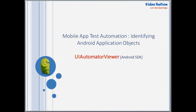Hello friends, welcome to VideoTuition. When it comes to UI testing of Android applications, a more efficient and reliable approach is to automate the testing flow. For automating any application, we first should be able to identify the elements of the application, which in the case of an Android application is not so straightforward. In this short video, I am going to tell you how we can identify objects of an Android application for UI and automation testing.